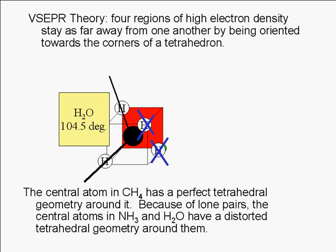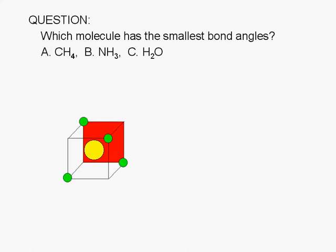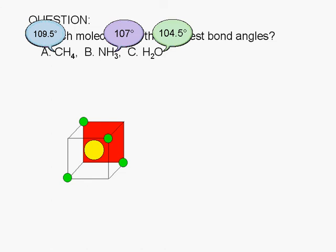To summarize, the central atom in CH4 has a perfect tetrahedral geometry around it. Because of lone pairs, the central atoms in NH3 and H2O have a distorted tetrahedral geometry around them. The bond angles are 109.5 degrees for methane, 107 for ammonia, and 104.5 degrees for water. Therefore, the correct answer is C.